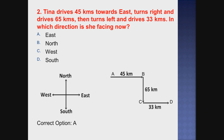How far does Tina travel - what direction is she facing? So Tina first travels east - from A to B, 45 km. After that, she travels from B to C, 65 km, by turning right. Then she turns left and travels 33 km from C to D.